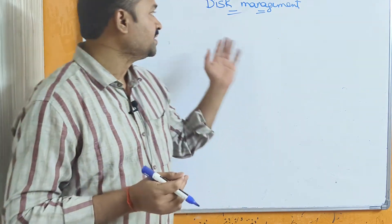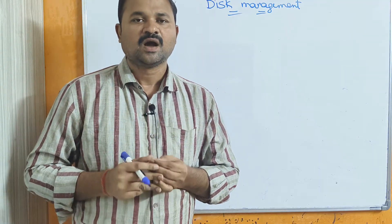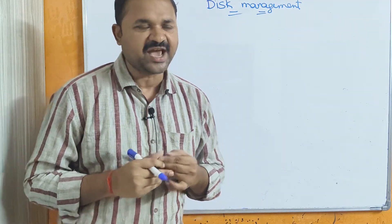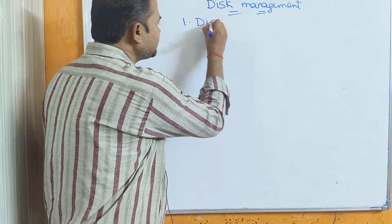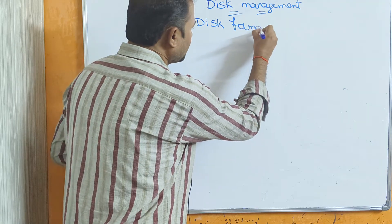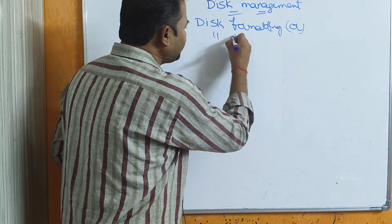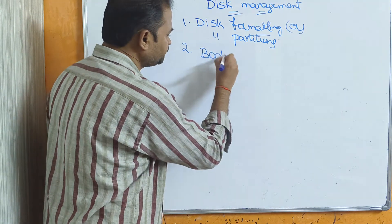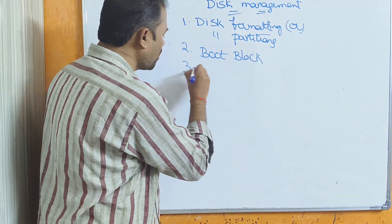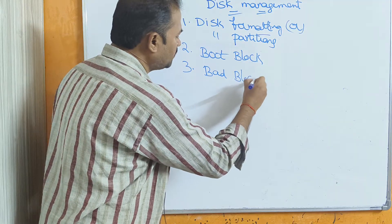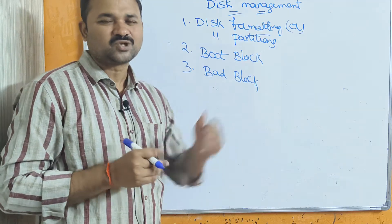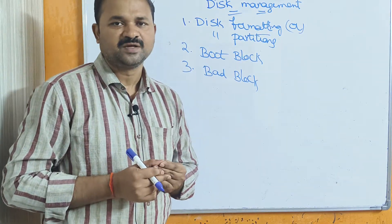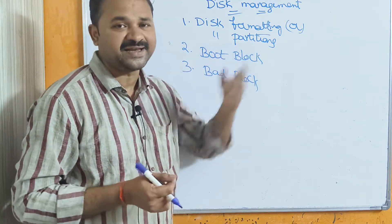Let us discuss disk management in operating systems. The operating system is responsible for several aspects of disk management. The three major aspects are: first, disk formatting or disk partitioning; second, boot block; and third, bad block. All three are responsibilities of the operating system in connection with disk management.